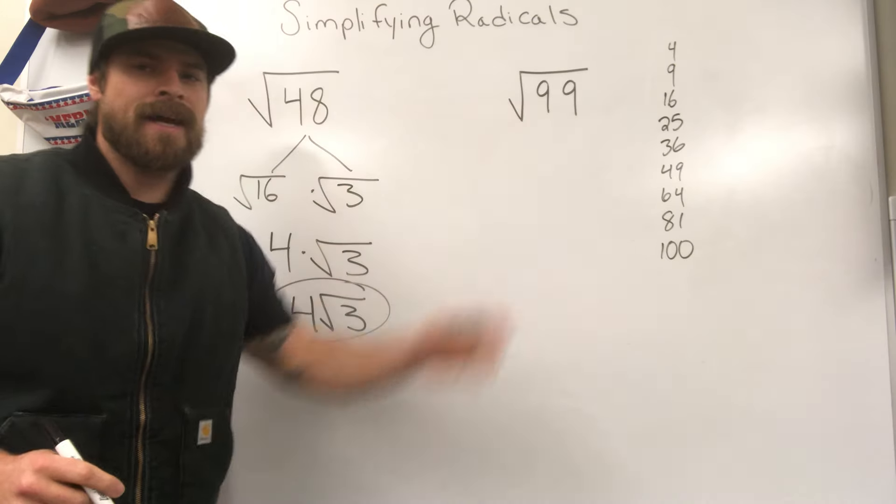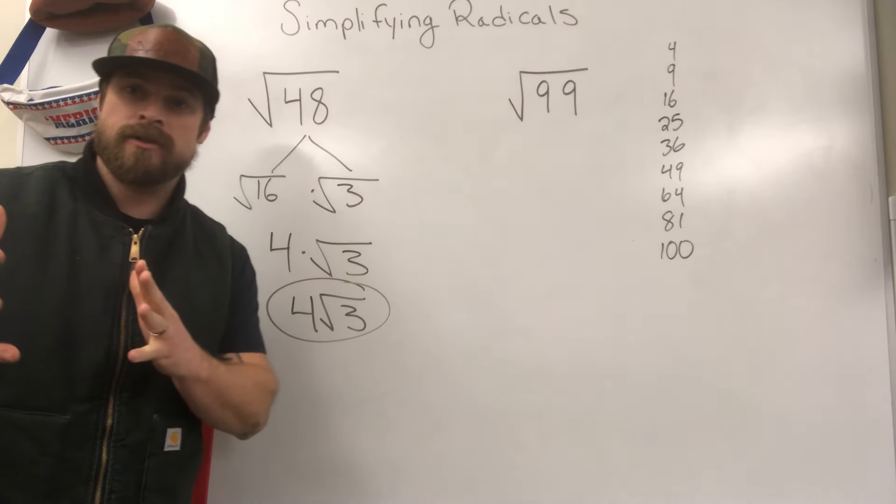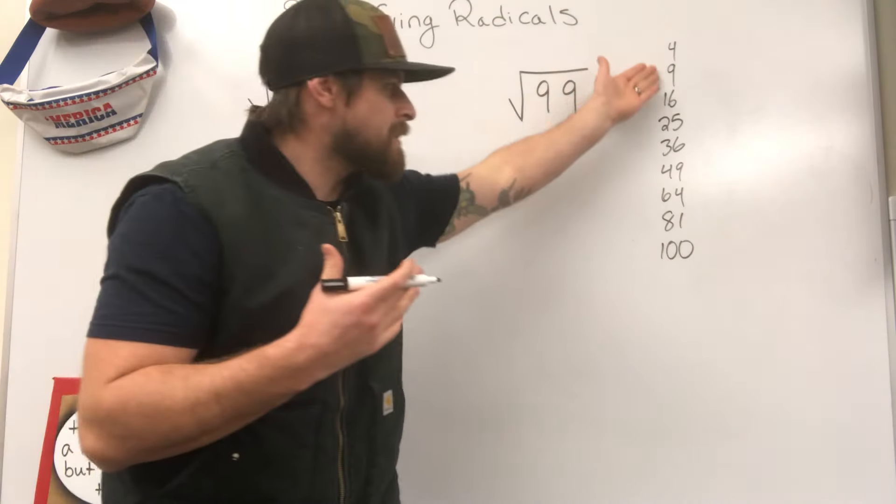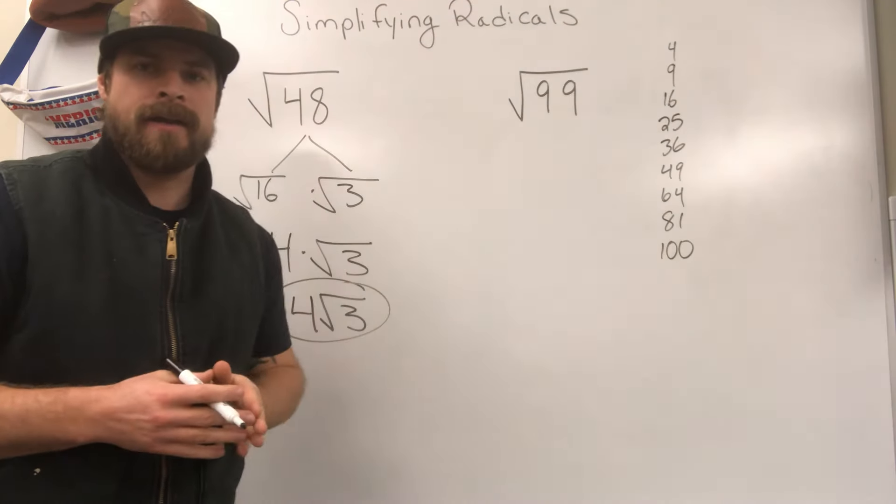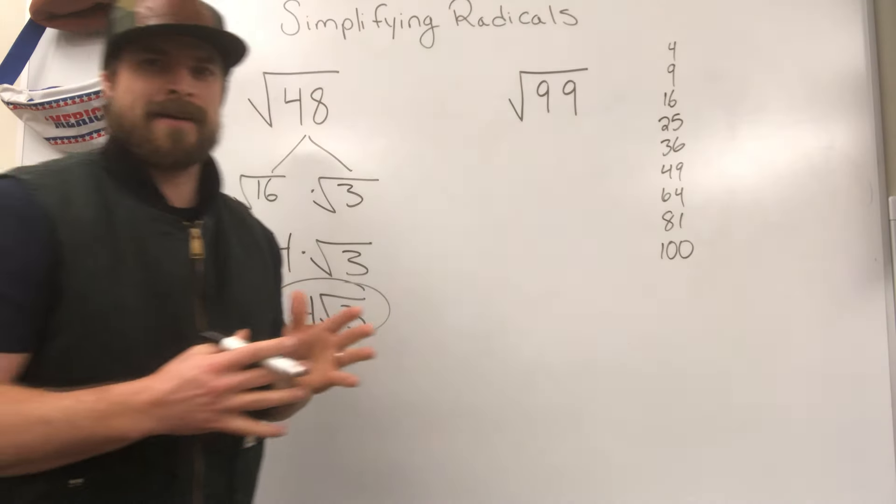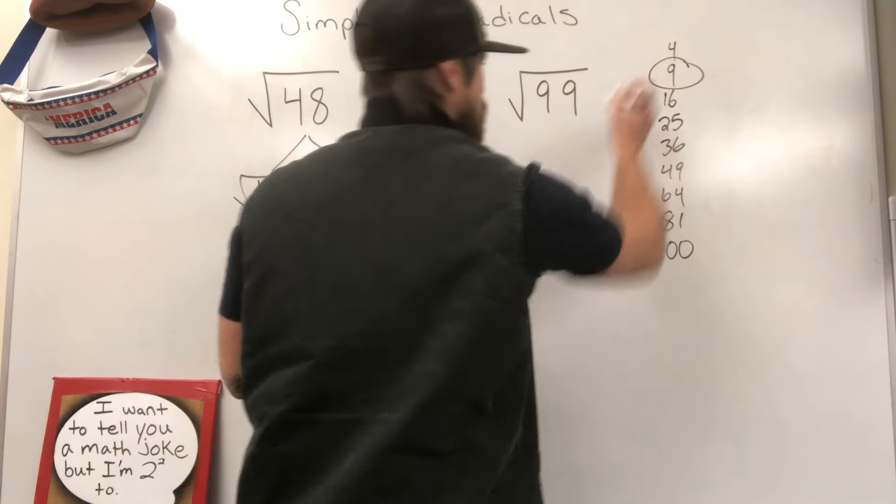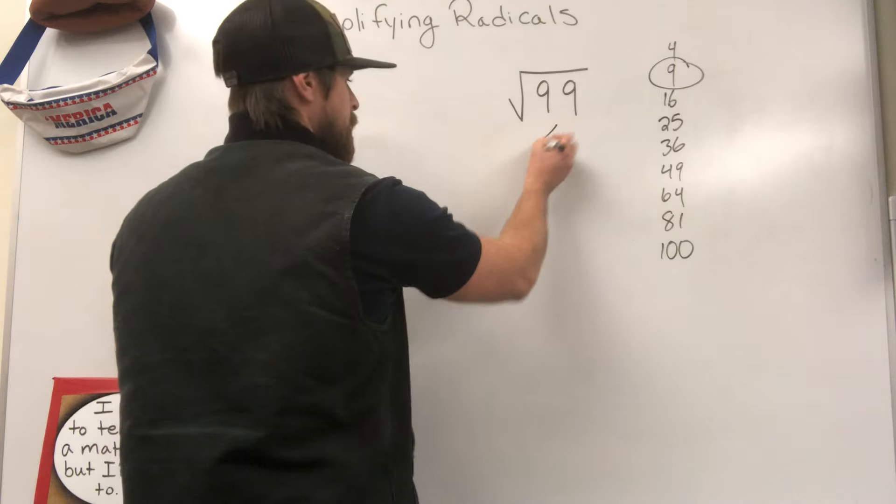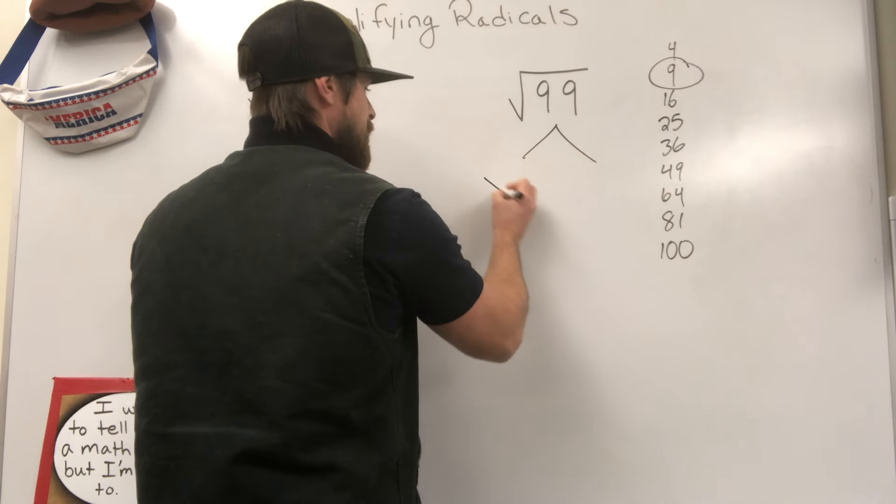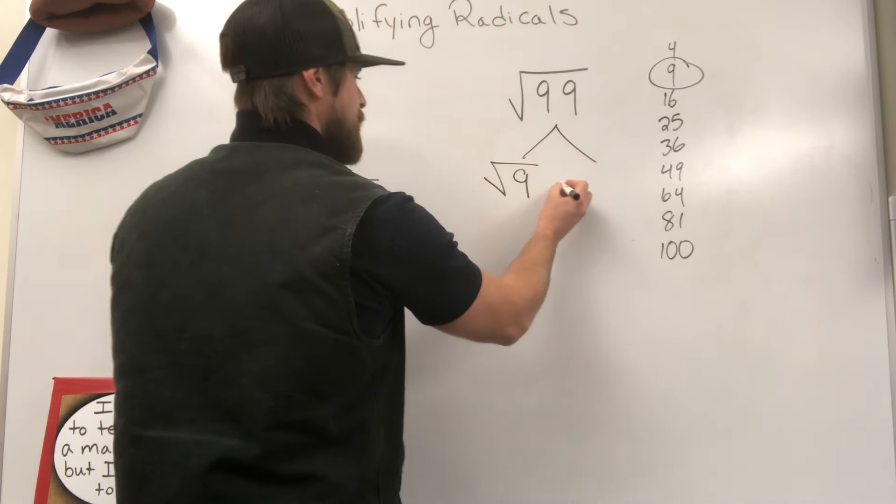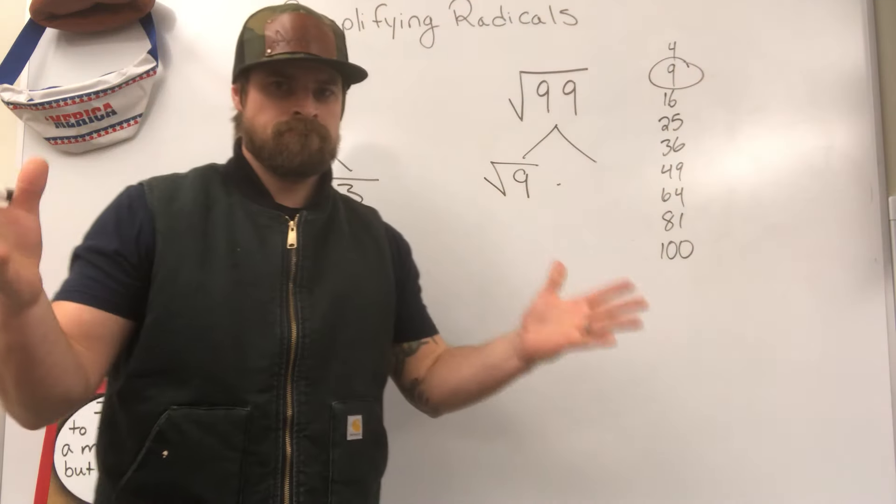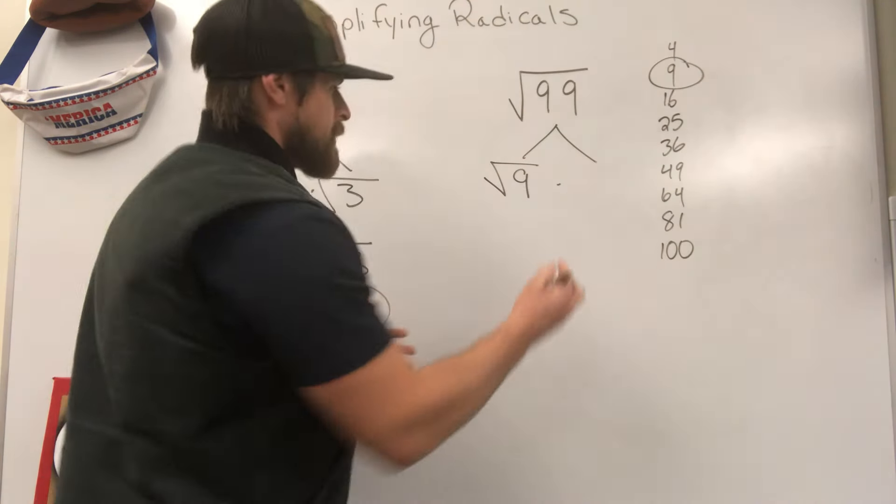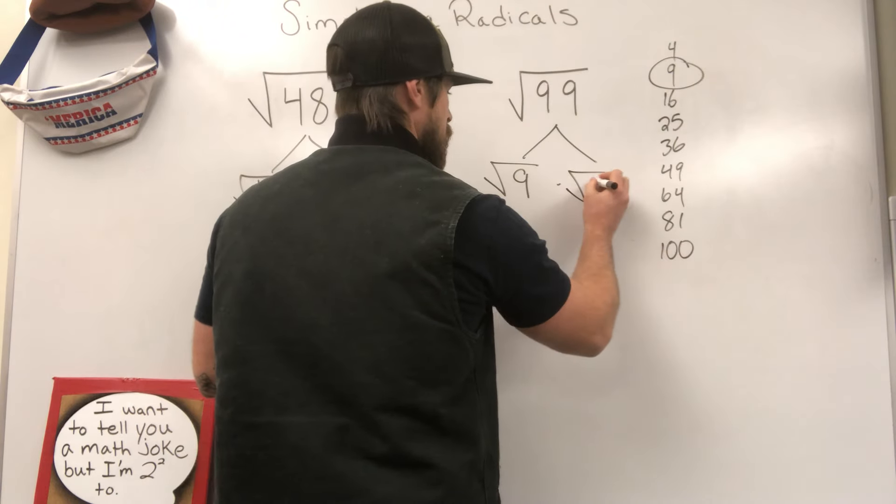Let's go over to 99. Step 1. Ask yourself, do any of these perfect square values work as a factor of 99? First one that stands out to me, and it seems like an obvious one, is 9. So I'm going to go right here and right here and I'm going to say the square root of 9 times, 9 times what equals 99? You know that. That's an 11. So we're going to put an 11 right there.